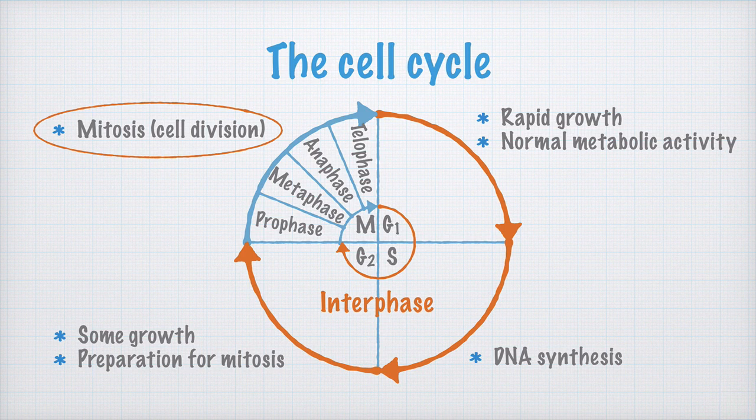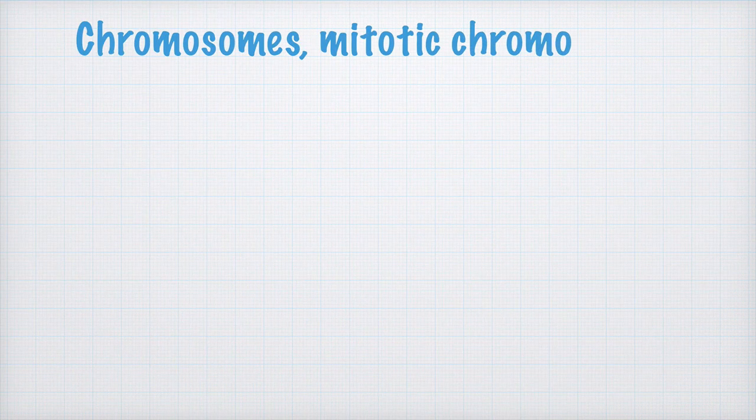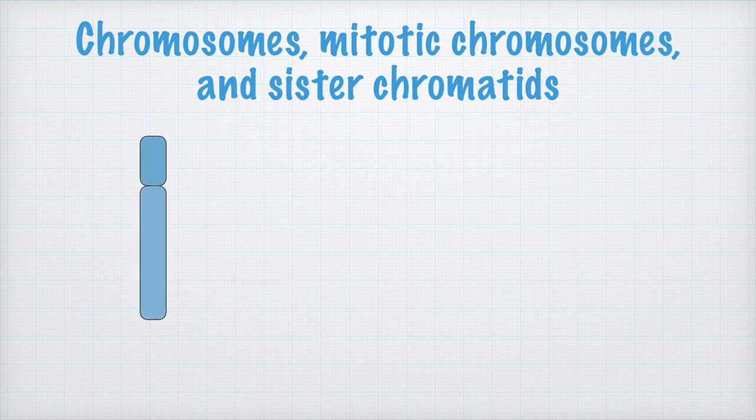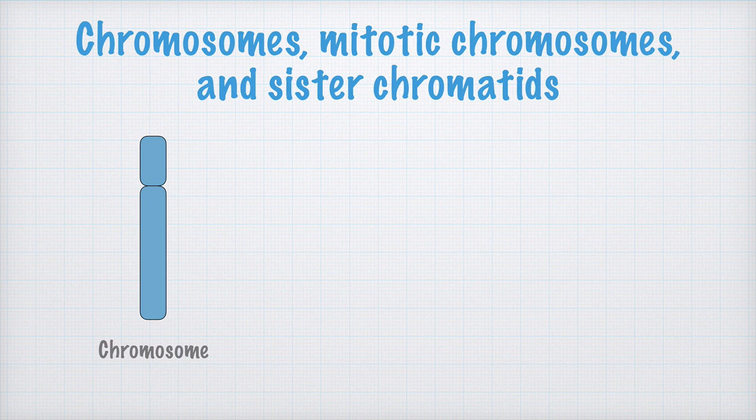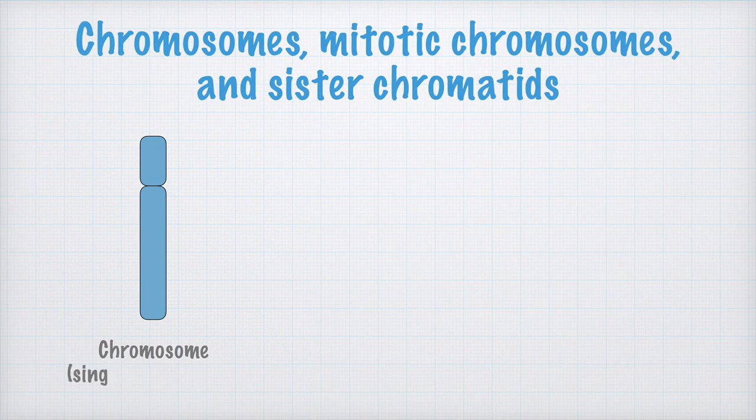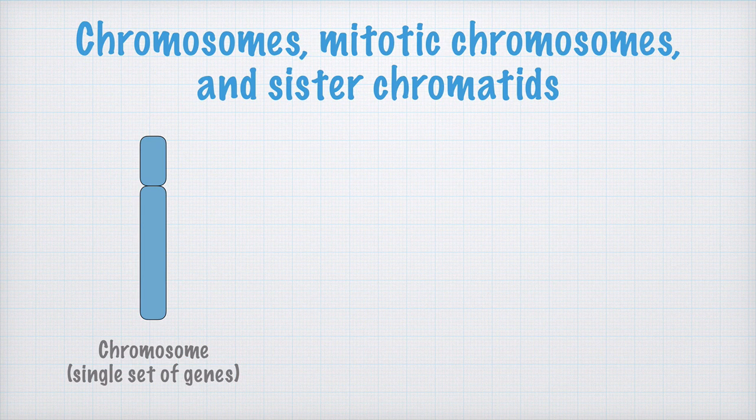Now, there are a few concepts that are terribly easy to mix up, that I want you to learn first. Chromosomes, mitotic chromosomes, and sister chromatids. Normally in a eukaryotic cell, one DNA molecule corresponds to a single chromosome. And this chromosome may be packed in a way that is shown here, dense, elongated, and with a single set of genes. This DNA molecule has not yet been copied.